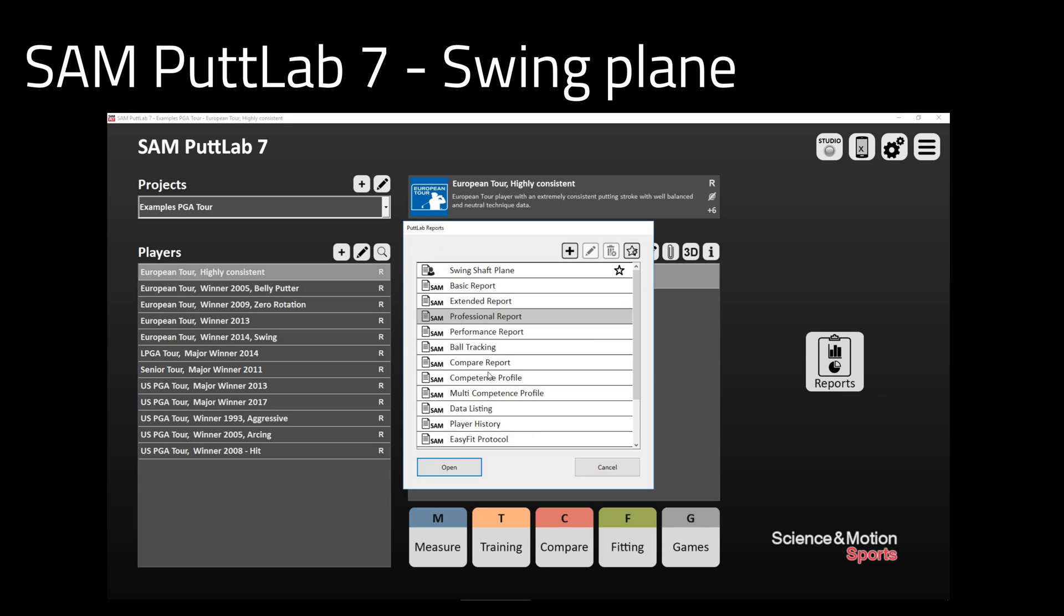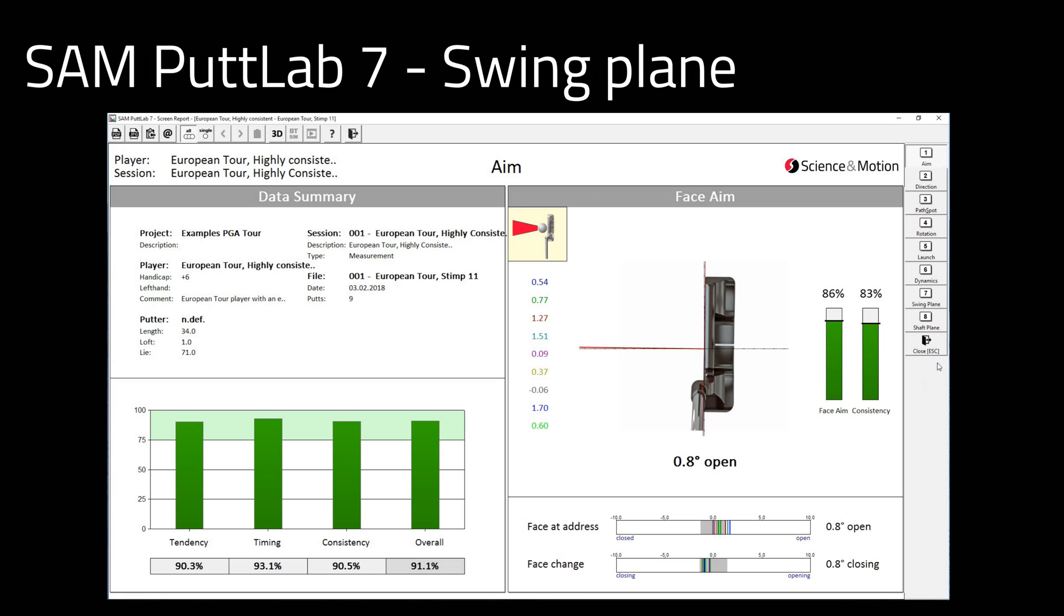If we open the professional report, you can see that there are two new report pages: swing plane and shaft plane. We go to the swing plane report and we open it for a single putt.